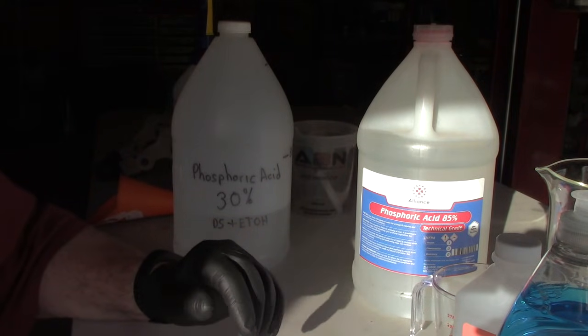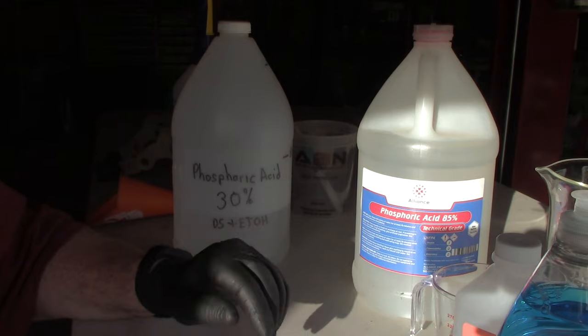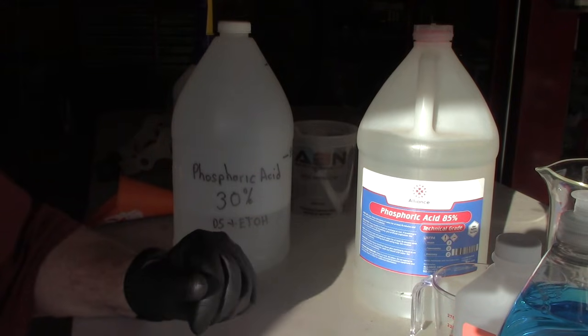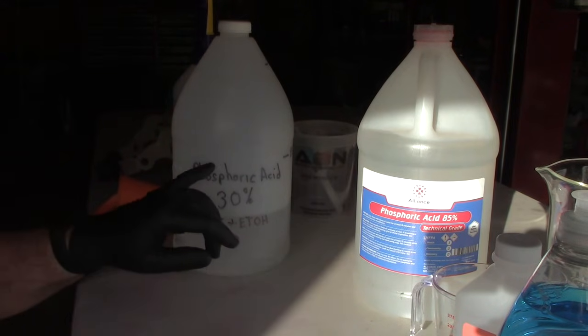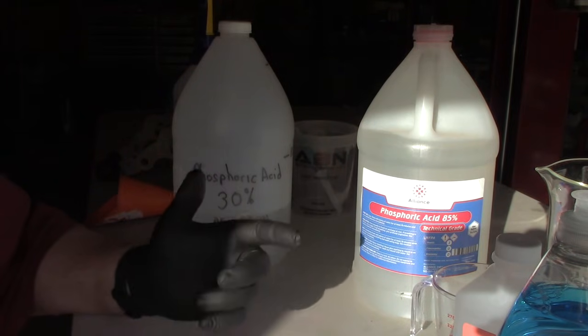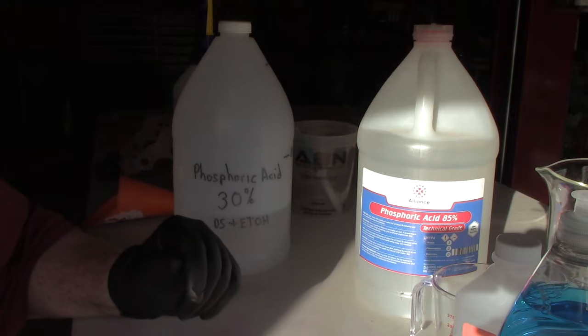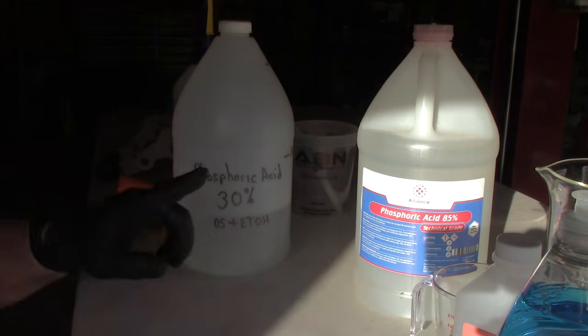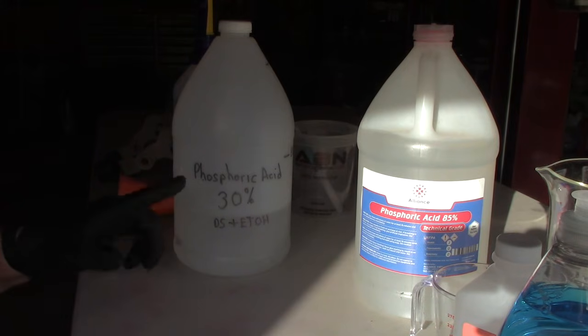Hello YouTube, welcome to the garage. Today we're going to be mixing up some phosphoric acid rust converting solution. The reason I use phosphoric acid is it interacts with the iron oxide, which is rust, and converts it to an iron phosphate which is inert and won't rust anymore.